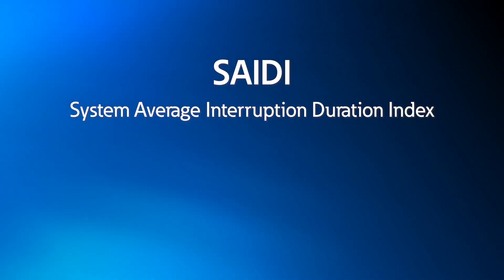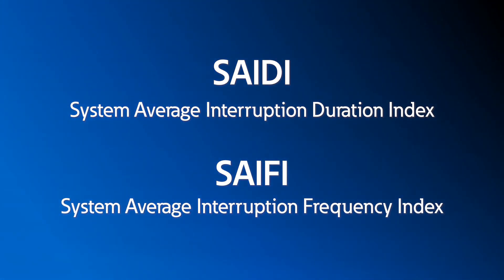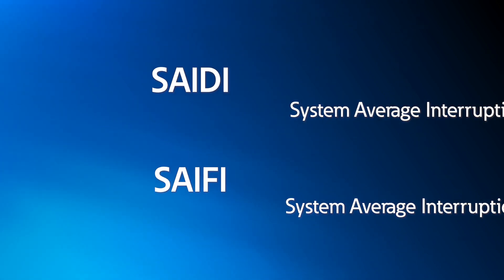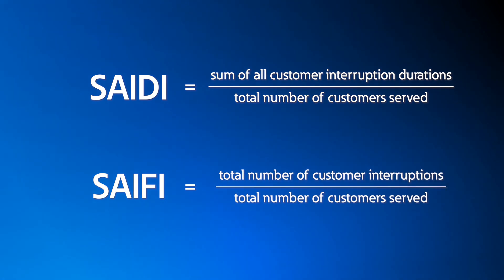Utilities need to prevent and minimize the duration of outages, as they're held to reliability and resiliency standards, such as SAIDI and SAIFI. SAIDI stands for System Average Interruption Duration Index, and SAIFI stands for System Average Interruption Frequency Index. In other words, SAIDI measures the duration of interruptions, and SAIFI measures the frequency of interruptions.